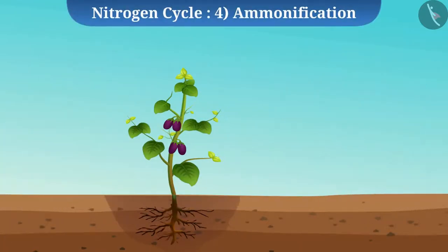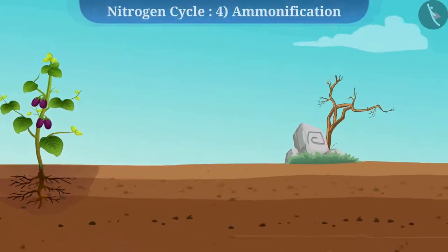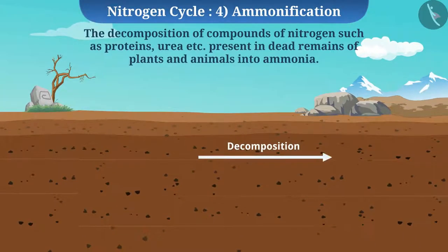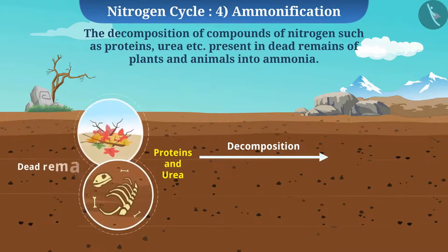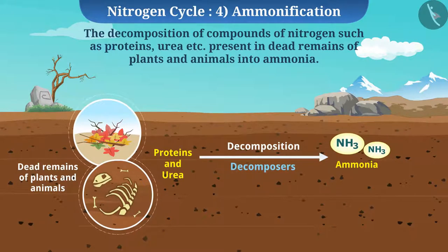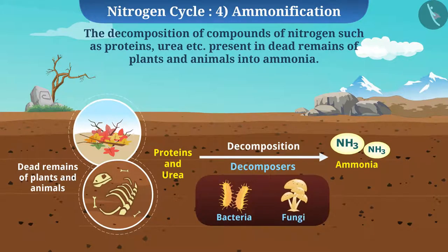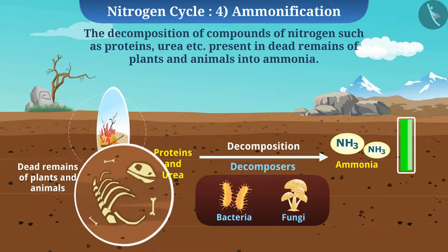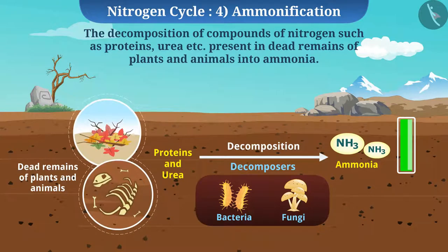Now let's talk about ammonification. The decomposition of nitrogen compounds such as proteins and urea present in dead remains of plants and animals into ammonia is called ammonification. It is carried out by decomposers such as bacteria and fungi. This process increases the concentration of ammonia in the soil, and as decomposers break down organic matter, it also helps in cleaning the environment naturally.